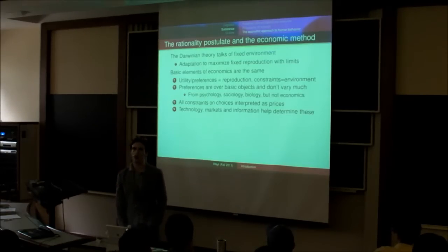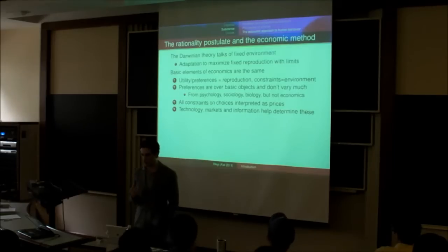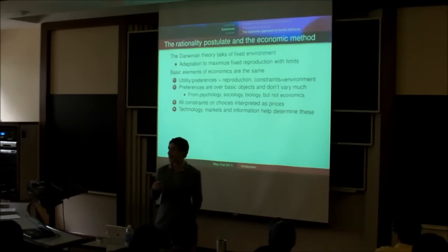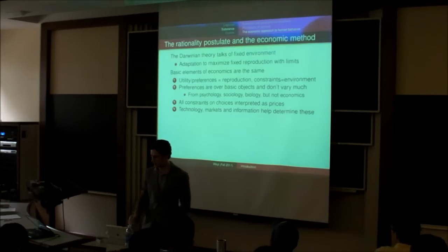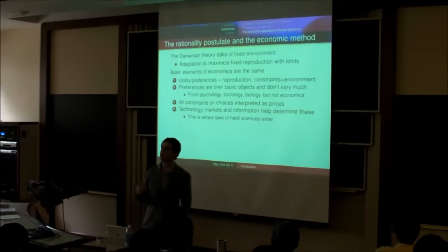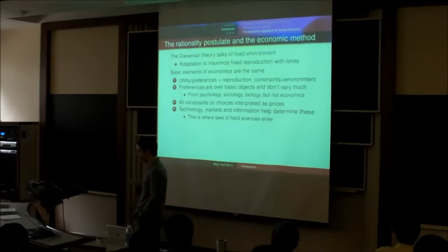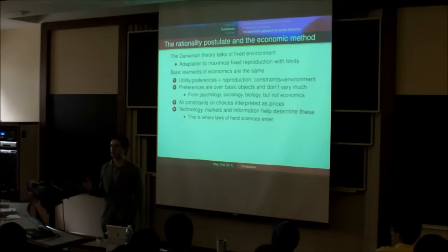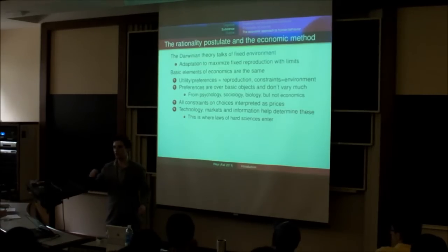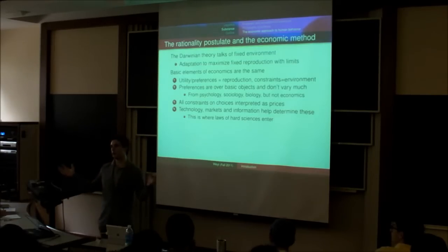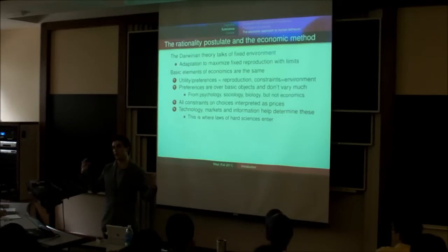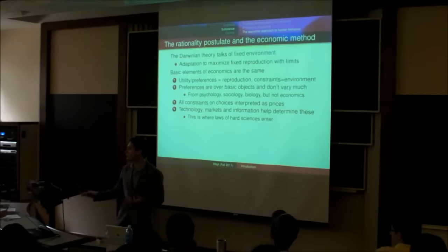And then we interpret all the constraints that people face as prices and markets in which they interact. And then those constraints are elaborated by things like technology available to people, how can people turn certain things into certain other things, the markets in which they interact, and the information available to them. And these are strongly influenced by the laws of natural science. So, for example, we'll make an assumption that the cost of producing something is very close to linear if there's an easy way to reproduce it, based on the physical structure. On the other hand, if it requires that we build a very large factory, if that's the basic engineering of the matter, then we're going to think that there's going to be a fixed cost and then some low marginal cost.